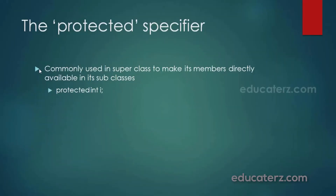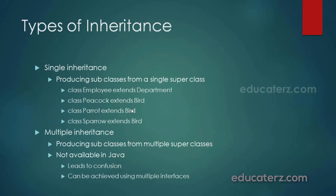Next are types of inheritance. Single inheritance means producing subclasses from a single superclass — for example, 'class Employee extends Department', where Department is the superclass and Employee is the subclass. Another example: class Peacock extends Bird, class Parrot extends Bird, class Sparrow extends Bird — Bird is the superclass while Peacock, Parrot, and Sparrow are all subclasses derived from Bird.